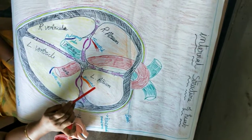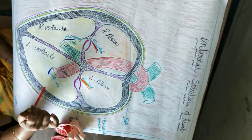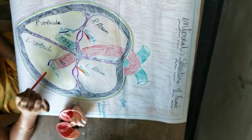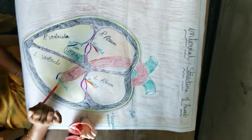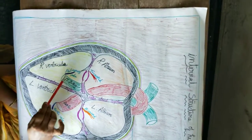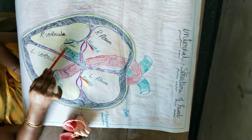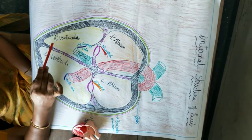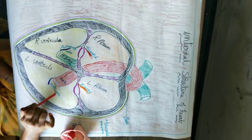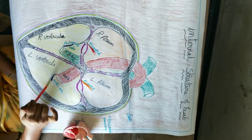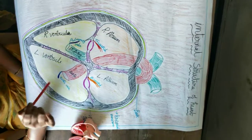The bicuspid valve allows blood to flow from the left atrium to the left ventricle. Next, the aortic valve — the valve present at the aorta is called the aortic valve. The last valve, present at the pulmonary artery, is called the pulmonary valve. The pulmonary valve allows blood to flow into the pulmonary artery but not come back to the right ventricle. The aortic valve allows blood to flow out of the left ventricle into the aorta but not flow back.